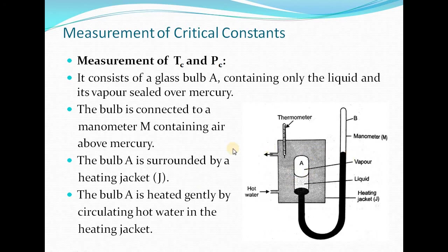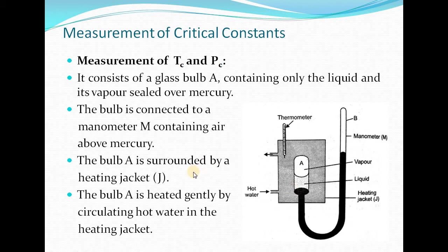This apparatus measures critical temperature and critical pressure simultaneously. In it, a glass bulb A contains only the liquid and its vapours sealed over mercury. This bulb is connected to a manometer M containing air above the mercury. Bulb A is surrounded by a heating jacket, required to increase or decrease the temperature during the process, and a thermometer is placed in the heating jacket to measure temperature simultaneously.